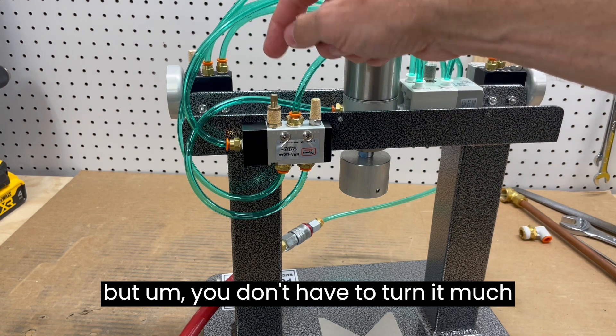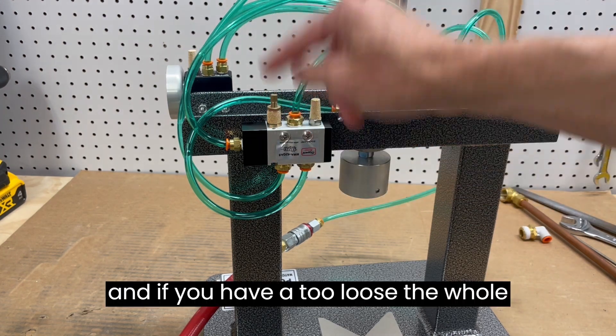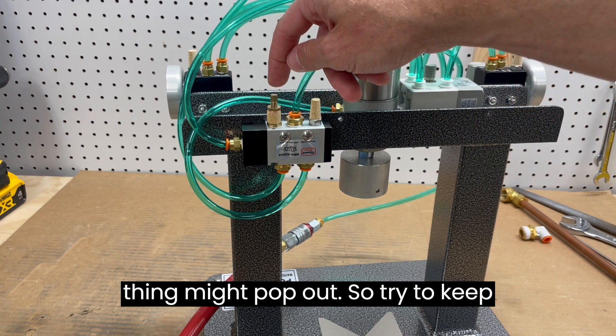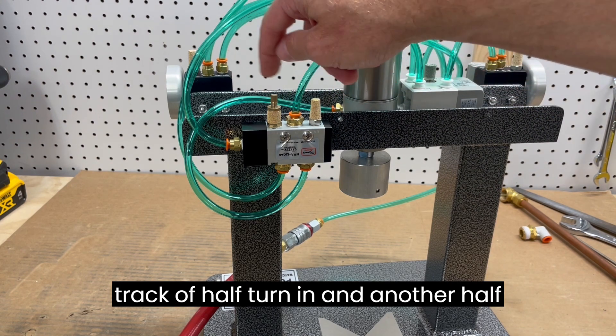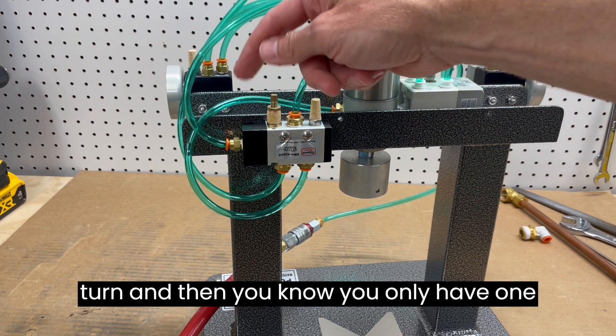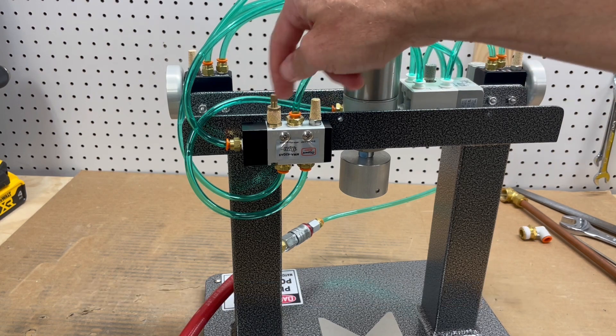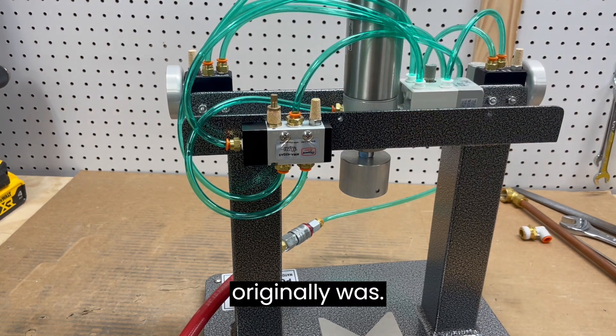But you don't have to turn it much. And if you have it too loose, the whole thing might pop out. So try to keep track of a half turn in and another half turn. And then you know you only have one full turn to get it back to where it originally was.